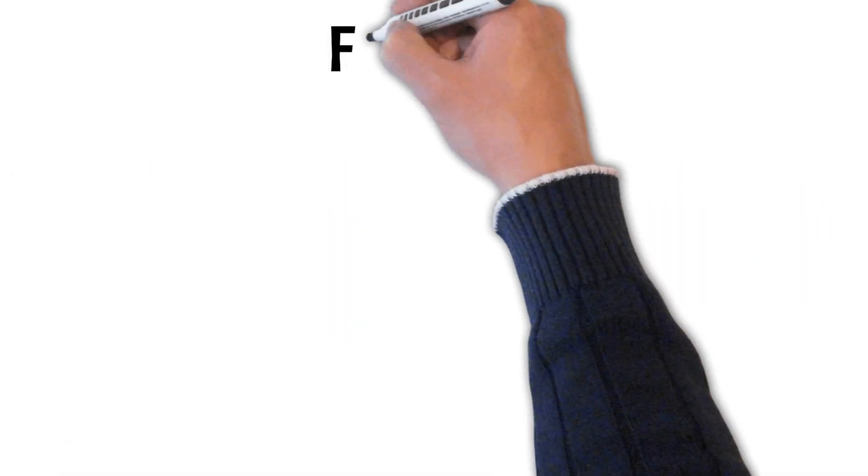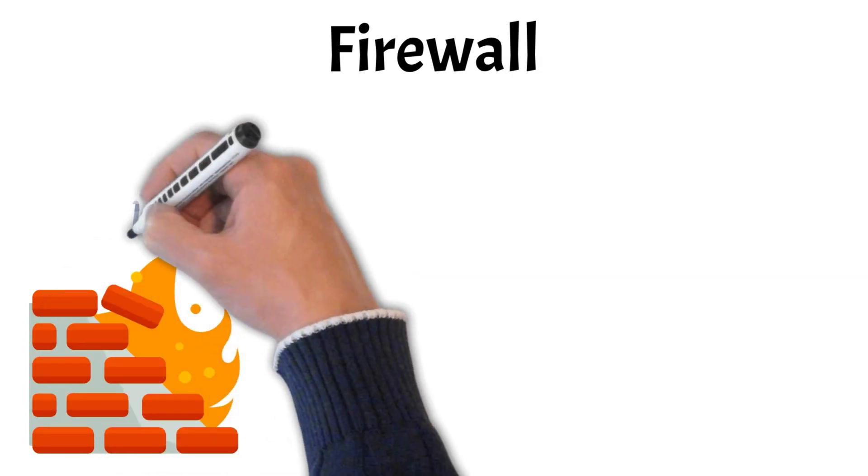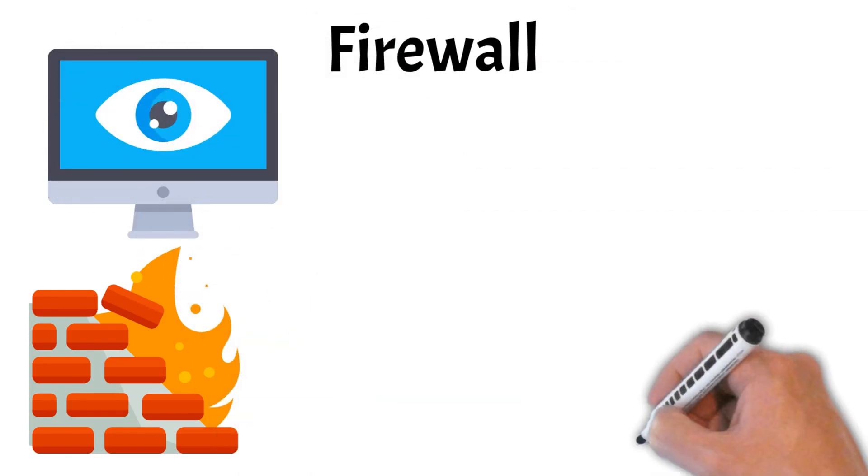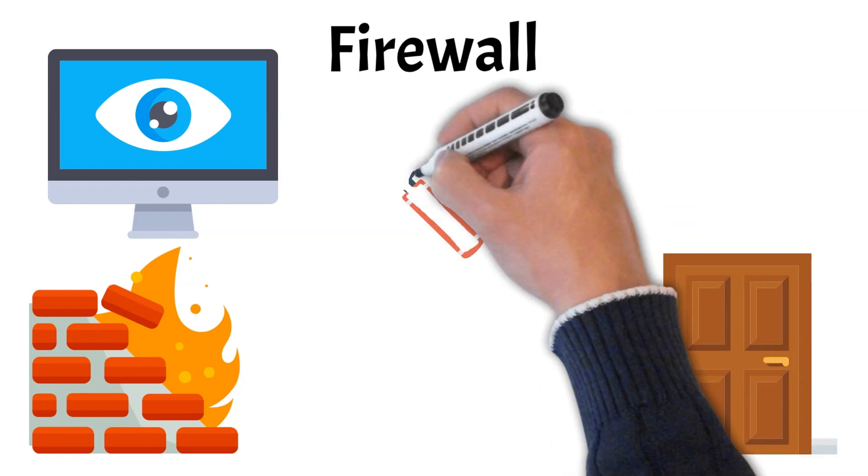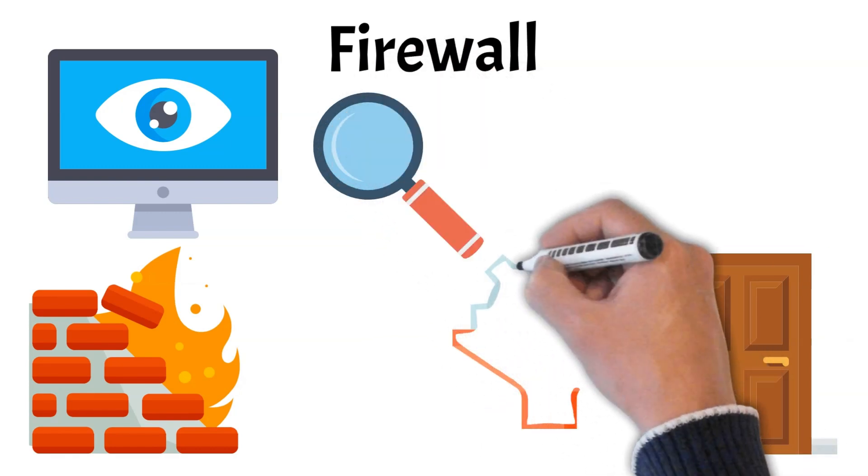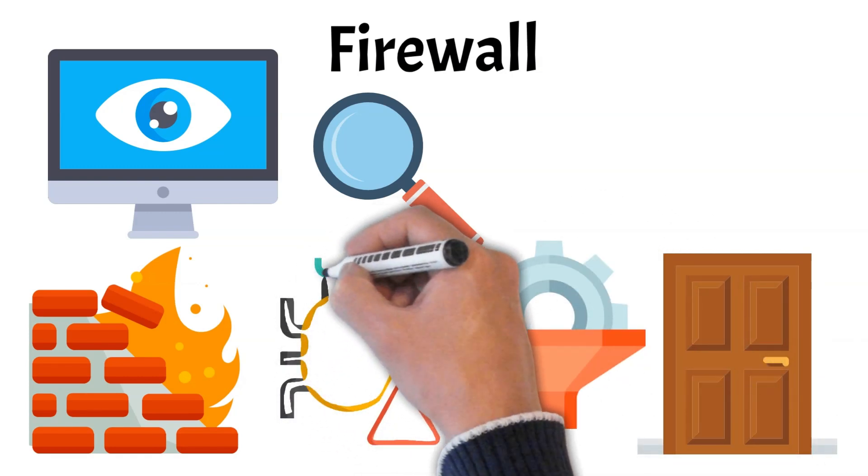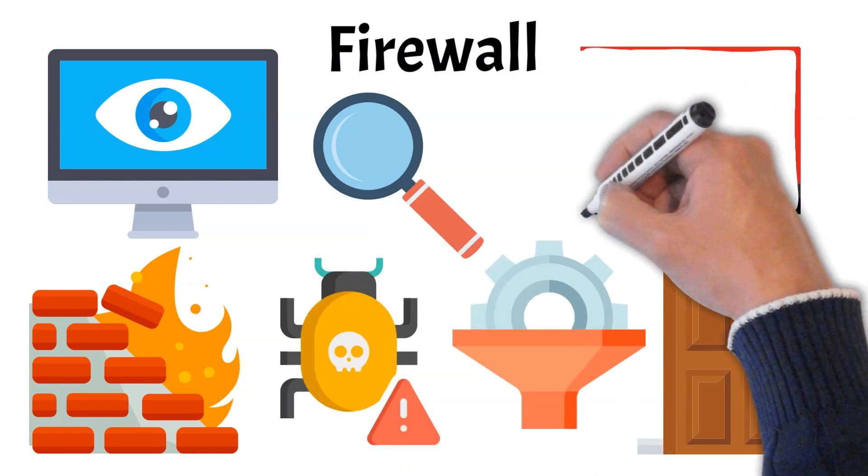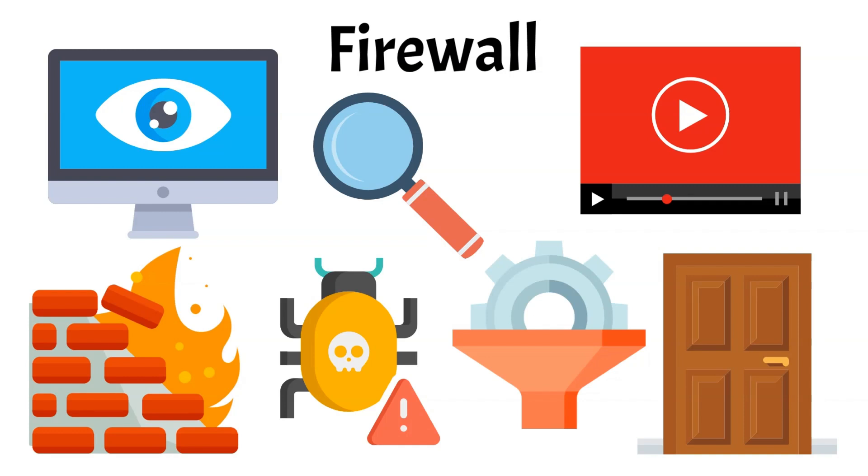Let's now discuss an essential component of network security, the firewall. Firewalls act as a security barrier between your internal network and the internet, monitoring and controlling incoming and outgoing traffic based on established security rules. A hardware firewall is typically installed at the network's entry point, ensuring that any data trying to enter or leave the network is thoroughly inspected. By filtering out malicious traffic and allowing only authorized data to pass through, firewalls help prevent unauthorized access, malware, and other cyber threats from infiltrating your network. For more insights into how firewalls work and their crucial role in network security, be sure to check out our separate video on firewalls linked in the description below.